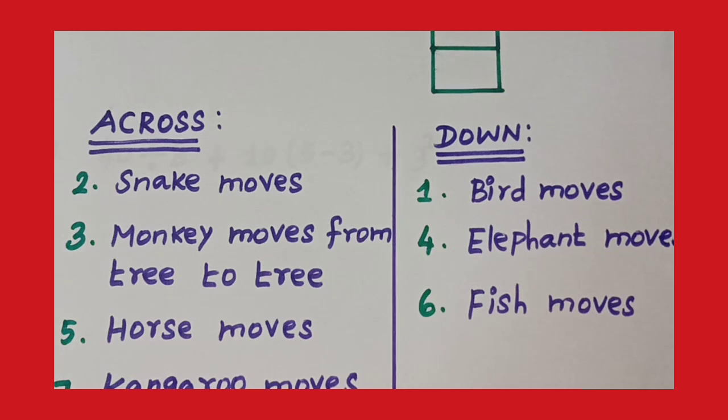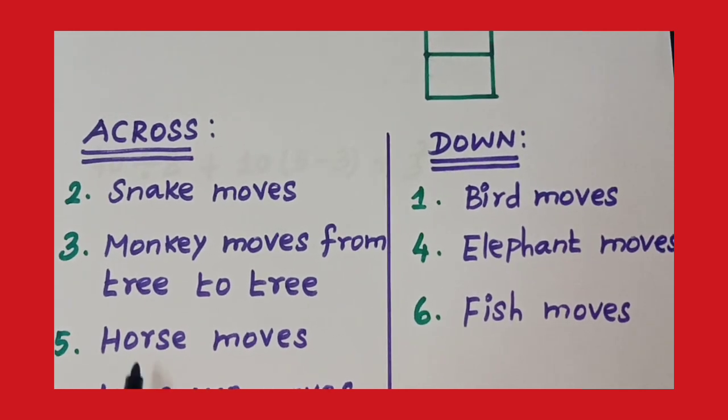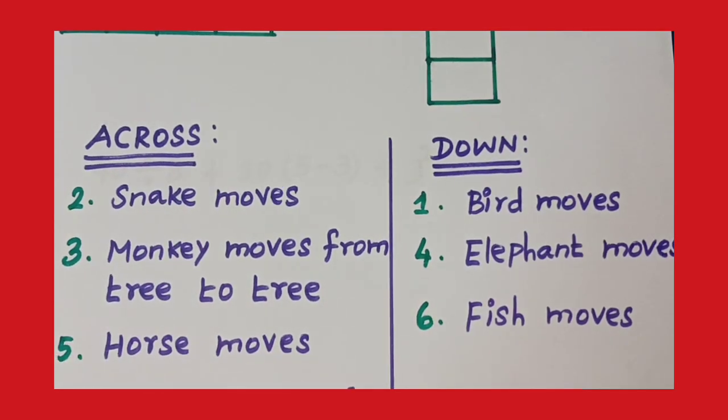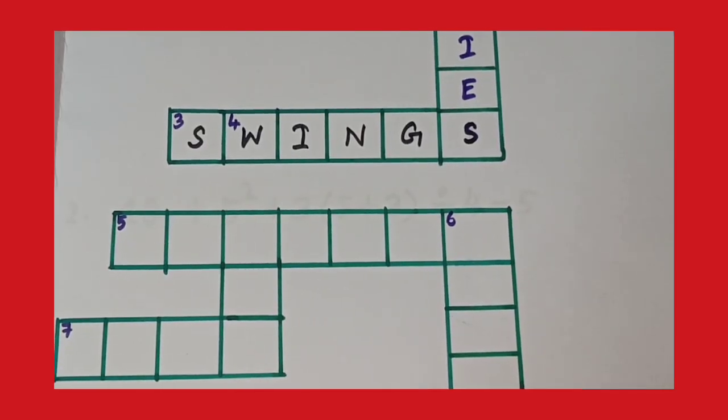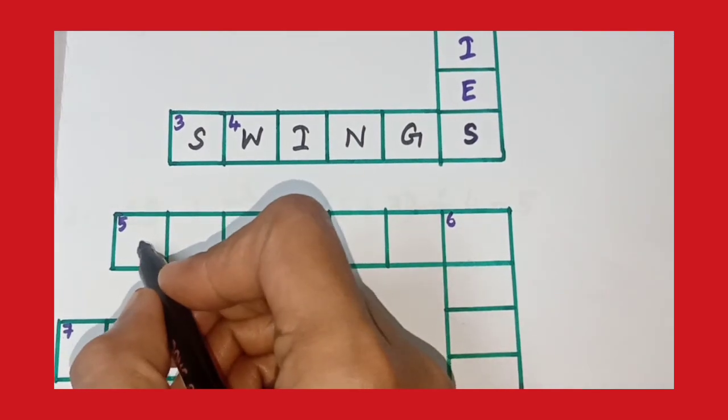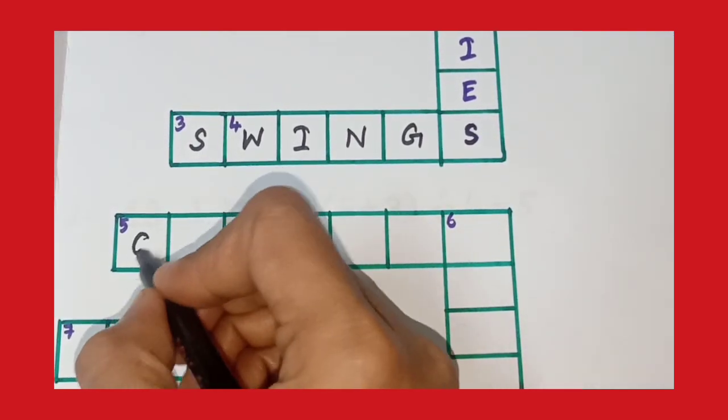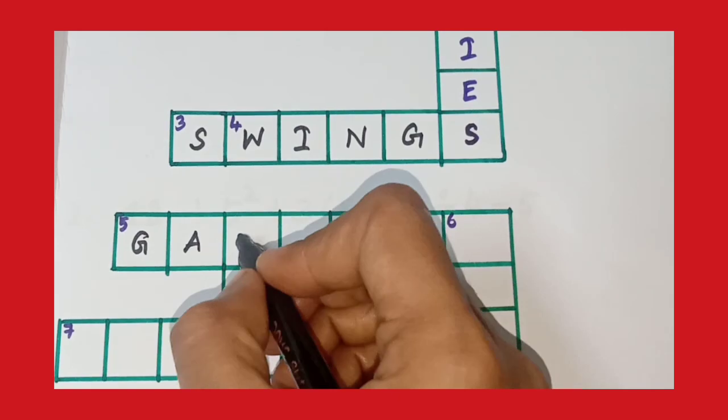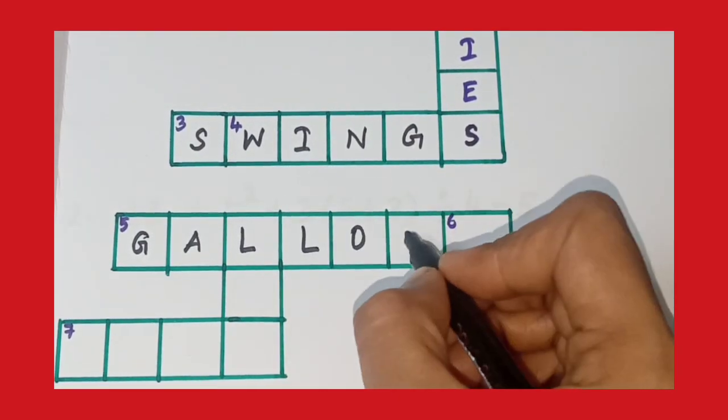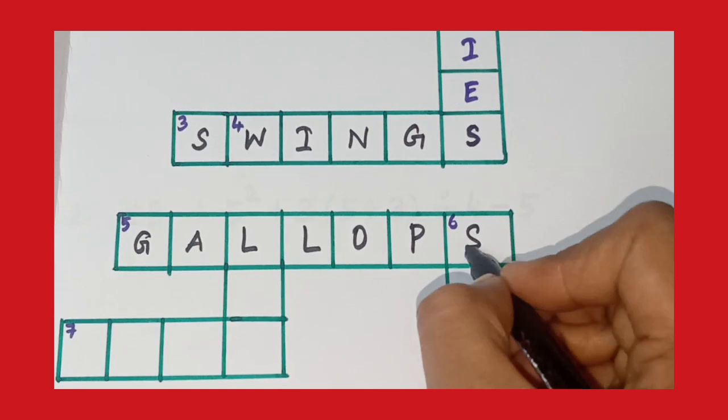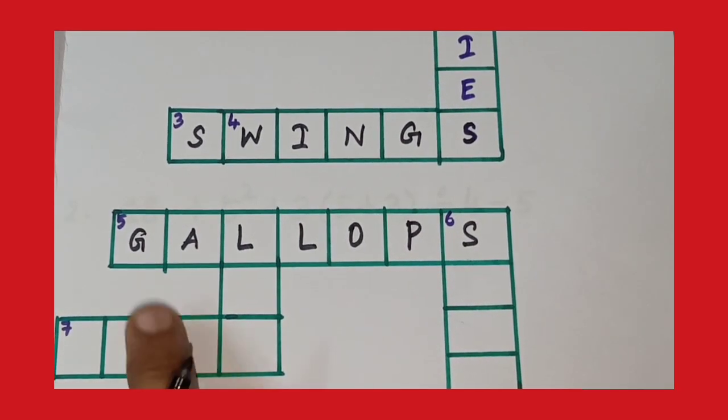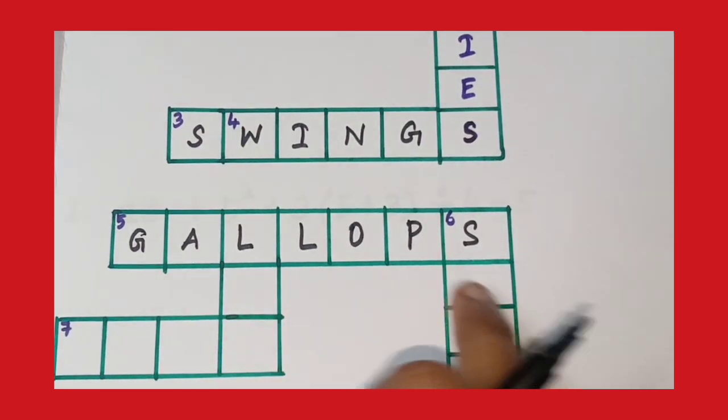And fifth one, horse. Horse moves. The clue is across. Horse moves across: gallops. G-A-L-L-O-P-S. Gallops. Horse moves across, gallops.